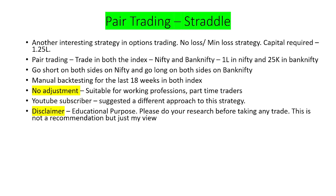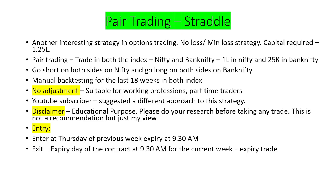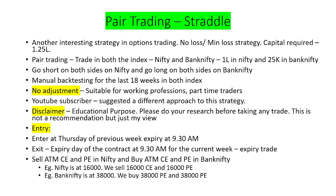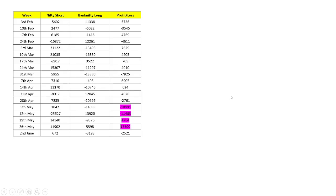In this strategy, we enter on the previous expiry at 9:30 AM and exit on the current expiry day at 9:30 AM, so that we can do expiry trades between 9:30 AM till the end of the trading day. What we do is: sell ATM call and put options in Nifty, and buy ATM call and put options in Bank Nifty. For example, if Nifty is at 16,000 we sell the 16,000 call and put; if Bank Nifty is at 38,000 we buy the 38,000 call and put.